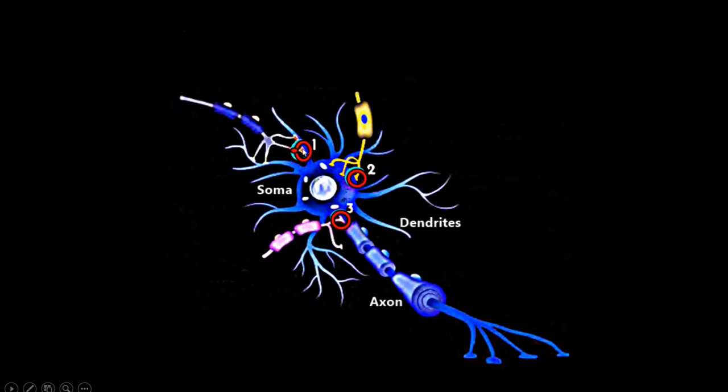For example, there may be synapses between the axon of one neuron and the dendrite of another neuron, and such synapses will be called axodendritic synapses.